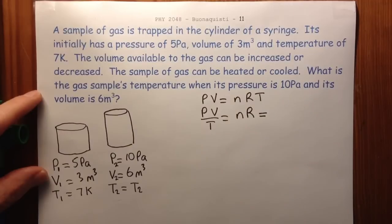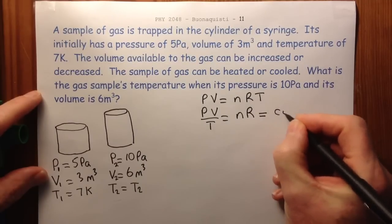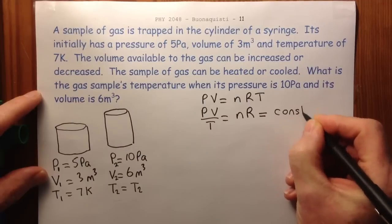And because for this particular problem the number of moles is fixed, we've trapped a volume of gas and we're changing the volume, but gas molecules can't get in or get out of the chamber. So the number of molecules is fixed, so n is fixed. And R is the universal gas constant. So these two multiplied together just equals a constant.